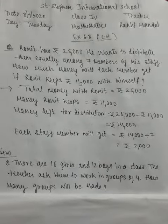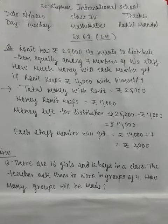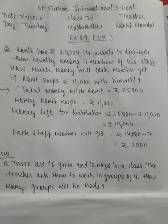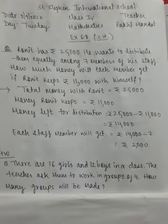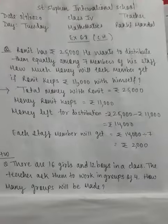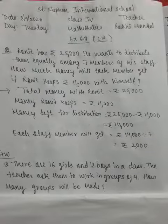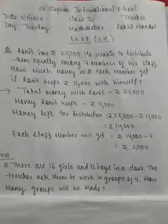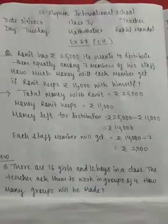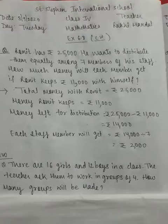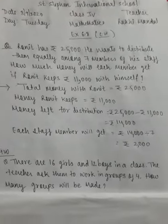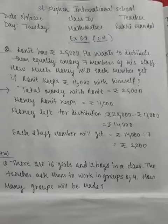Now each staff member will get 14,000 divided by 7. Hum divide karenge na? Kisko kitna milega? So the answer is 2000. Okay? Easy, students — understood?